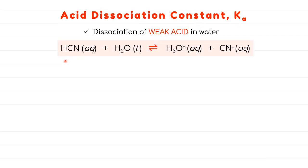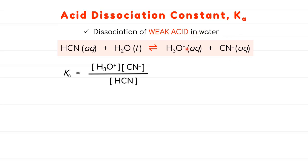Given weak acid HCN dissociates in water, note that the weak species which undergo partial dissociation will use a reversible arrow. The product is going to be H3O+ and CN−. This Ka, which belongs to the acid, can be expressed exactly the same as Kc, where the concentrations of products H3O+ and CN− are divided by the concentration of reactant HCN.